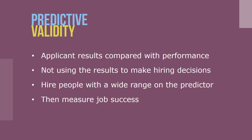Another method for establishing criterion-related validity is predictive validity. To calculate predictive validity, applicants' test results are compared with their subsequent job performance. Conducting the study involves administering a predictor test to applicants but not using the results to make hiring decisions. That allows a company to hire people with a wide range of scores on the predictor and assess whether their subsequent job performance differs.